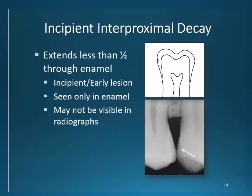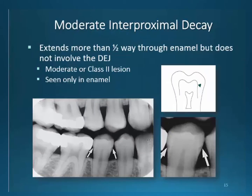Incipient proximal decay extends less than one half through the enamel surface. Incipient, which means early lesion — these lesions are rarely seen on radiographs. When they do appear, it may be due to excellent technique and a trained eye. They also may be more advanced than visually seen. As noted earlier, the radiographic image of decay may appear much less involved than when the true restoration is complete. Moderate interproximal decay extends more than one half through the enamel but does not involve the dentin enamel junction. These lesions are only seen in the enamel on radiographs. Typically, 40 to 50% of the tooth structure has been invaded before these lesions are detected on film, and when restored may become class 3.